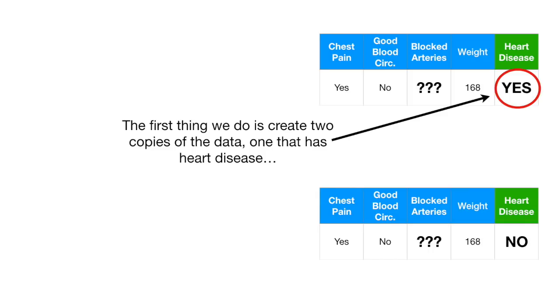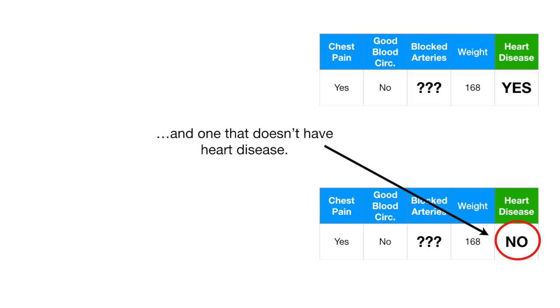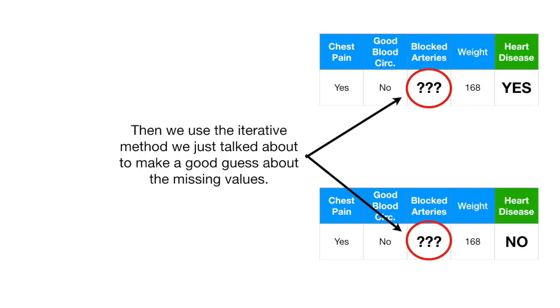The first thing we do is create two copies of the data, one that has heart disease and one that doesn't have heart disease. Then we use the iterative method we just talked about to make a good guess about the missing values. These are the guesses that we came up with.